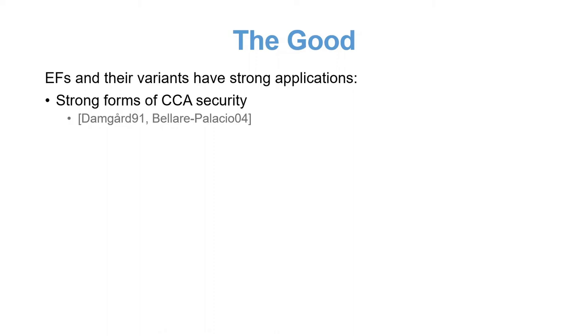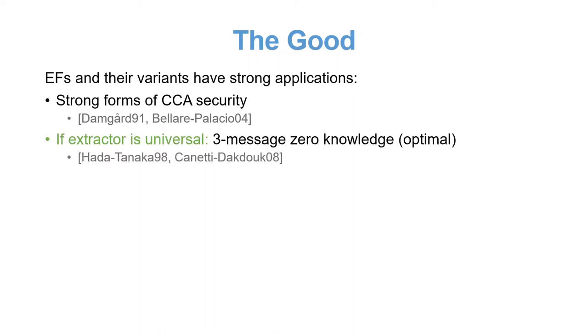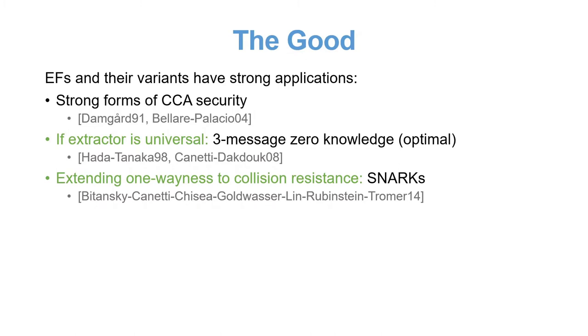Furthermore, if we achieve universal extraction, meaning that the extractor is the same for all adversaries, we also get three message zero-knowledge arguments, which is the optimal round complexity. If we extend one-wayness to create resistance hardness, then it also implies succinct non-interactive arguments of knowledge.